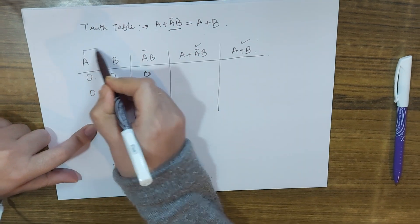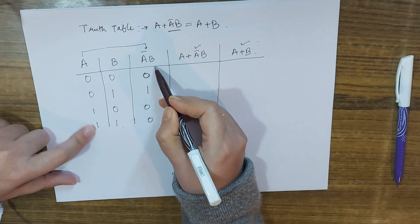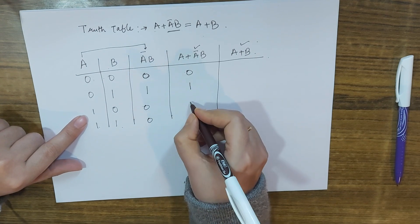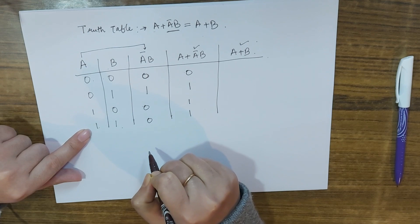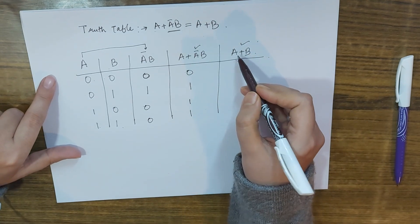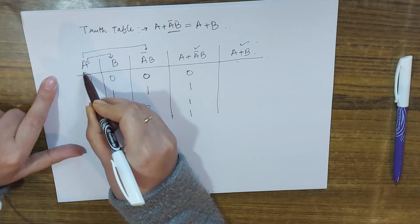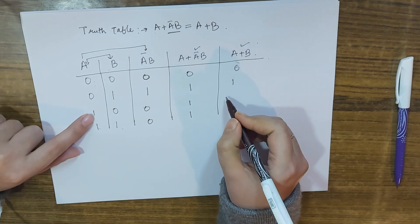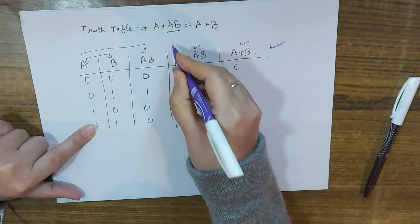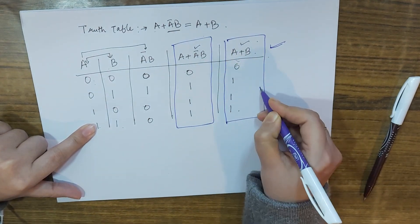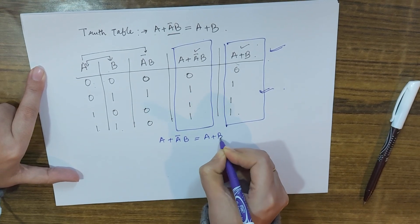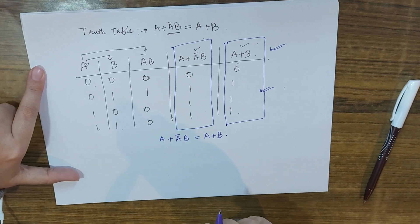Now OR-ing A with A-complement B: 0 OR 0 = 0; 0 OR 1 = 1; 1 OR 0 = 1; 1 OR 0 = 1. For A plus B: 0 OR 0 = 0; 0 OR 1 = 1; 1 OR 0 = 1; 1 OR 1 = 1. Both columns are equal, so through the truth table we have proved that A plus A-complement B is always equal to A plus B — Rule 11 is proved. Thank you for watching.